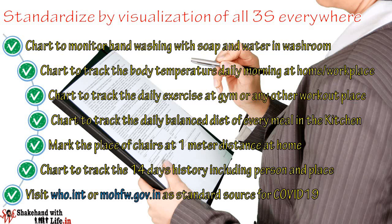Now come to the fourth S: Standardization. Standardization ensures the standard practice of the first three S's and visual management. In case of COVID-19 prevention it includes: place a chart in the washroom or workplace to monitor hand-washing frequency during the day, place a chart to track body temperature in the morning, place a chart at the workout area to track daily exercise, place a chart in the kitchen to track a balanced diet for breakfast, lunch, and dinner to improve immunity, and place chairs at one-meter distance in the drawing room, balcony, garden, and terrace to practice social distancing at home and workplace.